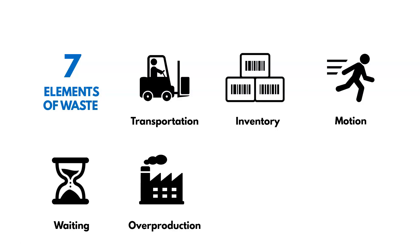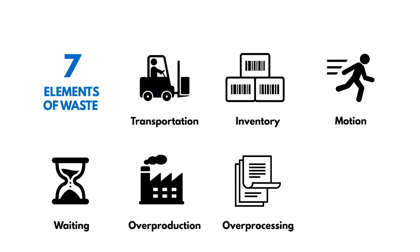Then there's the waste of overproduction — producing more of our finished product than we actually need. Then there's the waste of overprocessing: performing more steps than the customer actually requires, sometimes referred to as gold plating, doing things that they just don't really need. And finally, there's the waste of defects — producing products or services that are defective and have to be corrected.